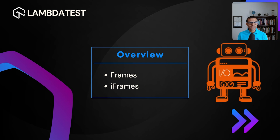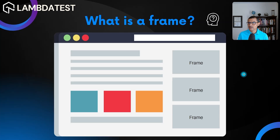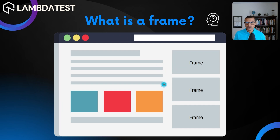We're going to see how we can automate frames and iframes. First, let's look at what a frame and an iframe are. Frames are basically something that used to allow developers to divide a website into different sections. This is no longer in practice today — it's more of an obsolete thing used during the 90s or early 2000s. You would have different sections of the website in different frames, showcasing different items or types of information.